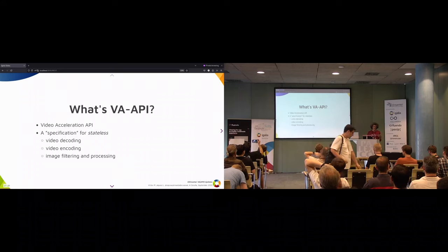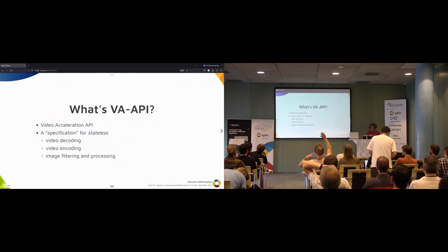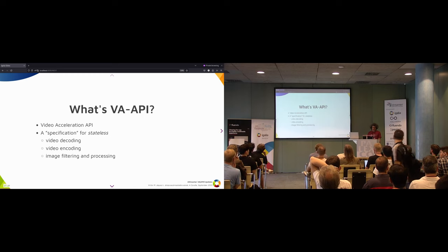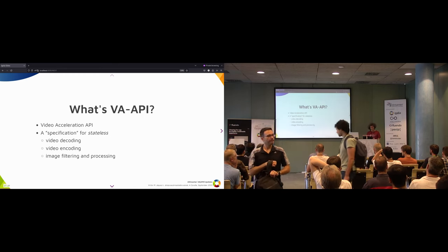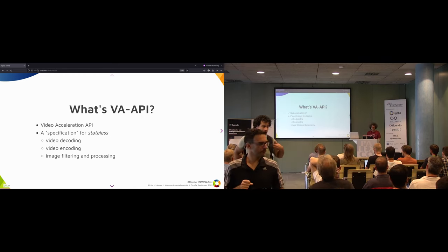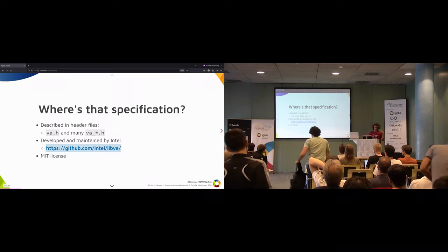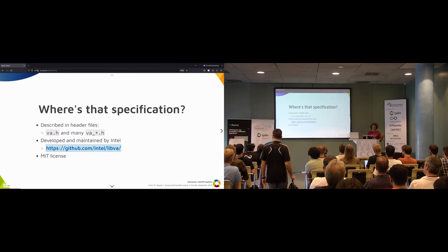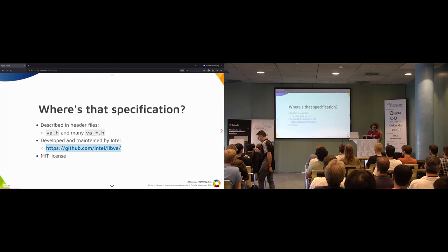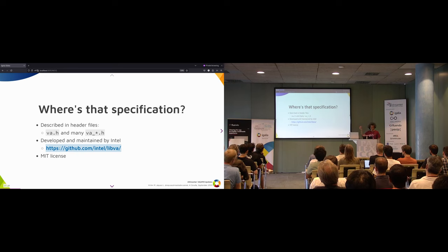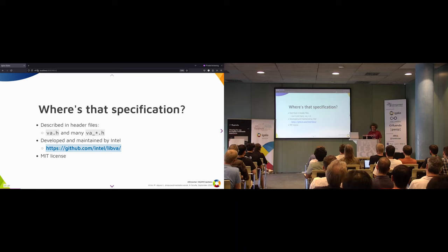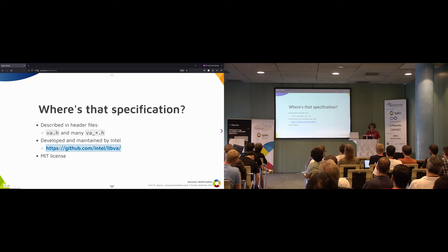Let's start with the basics. I know you mostly know all this, but just for review. VA-API stands for Video Acceleration API. It's a specification for stateless video decoding, encoding, image filtering, and processing. That specification is defined and described in header files in C, which are basically VA.h and a set of files for different things like encoding, decoding, processing, and every codec. It's developed and maintained by Intel, lives in a repository on GitLab, and is under the MIT license.